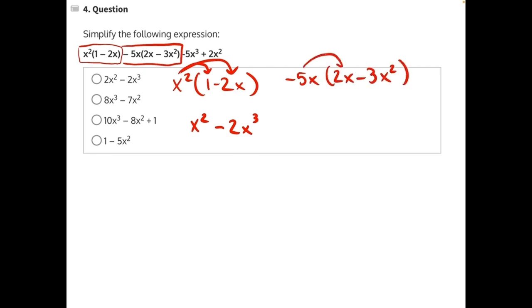Negative 5x times 2x would be negative 10x squared. Then negative 5x times negative 3x squared would be positive 15x cubed.